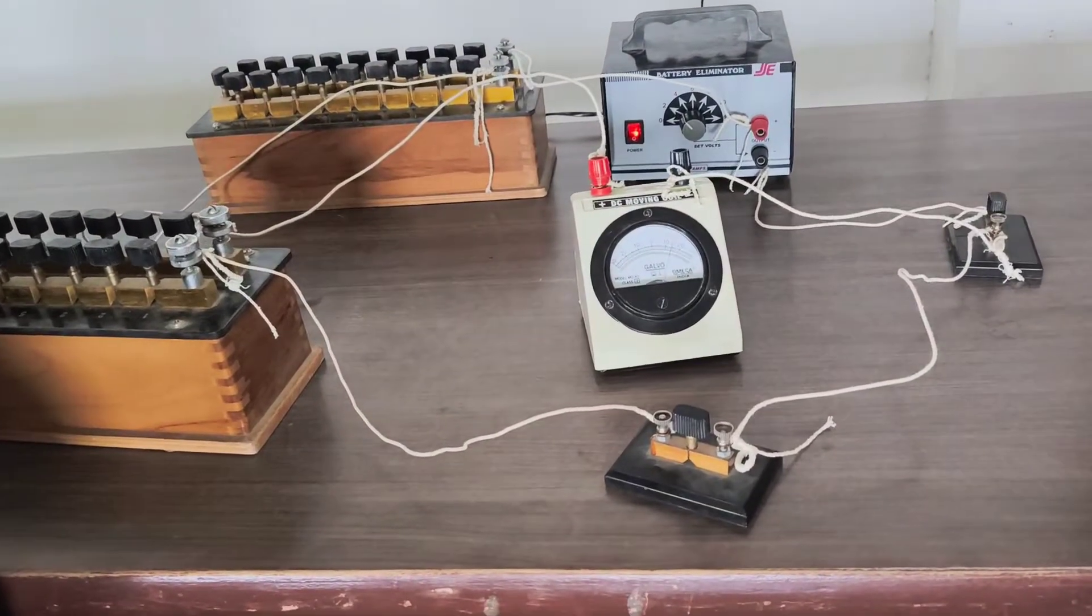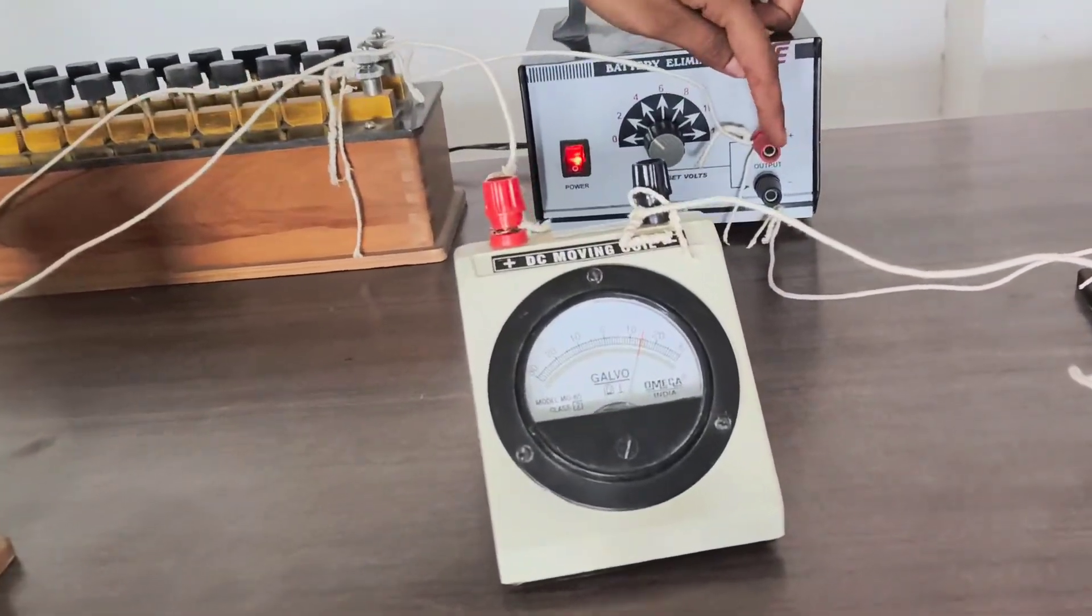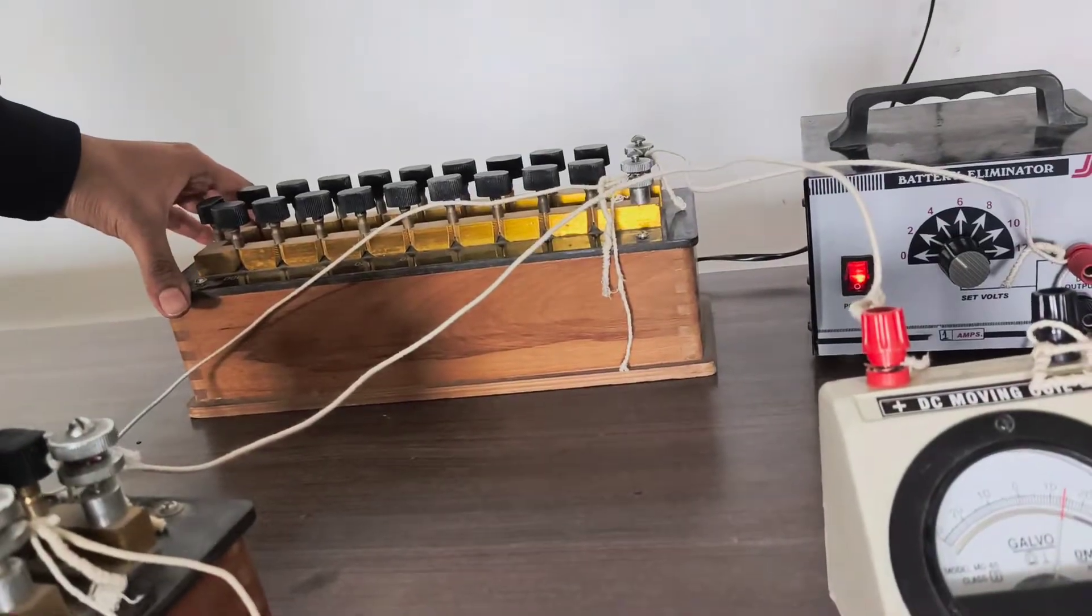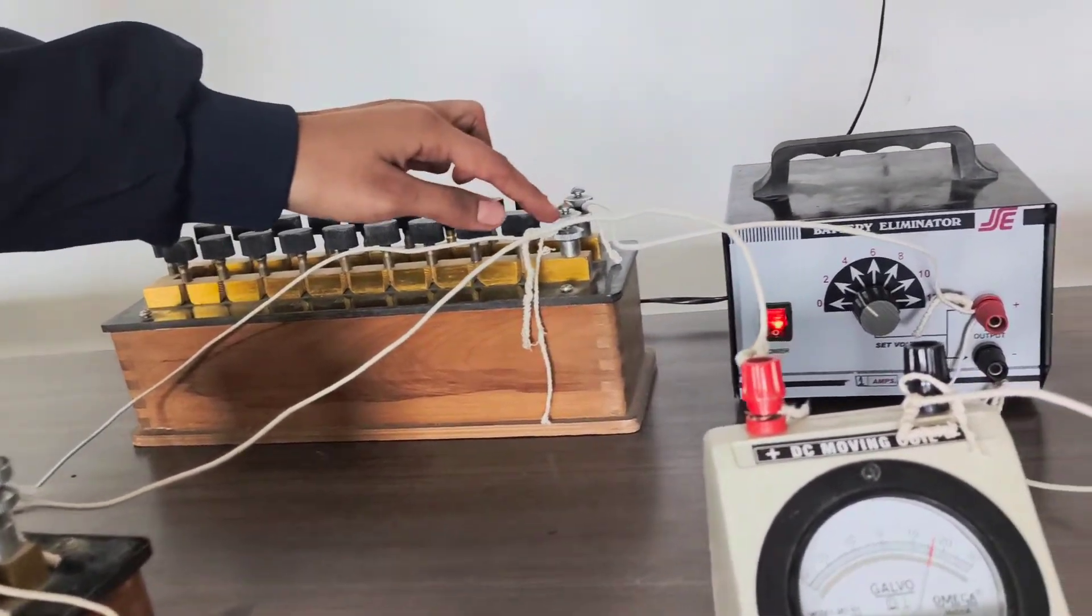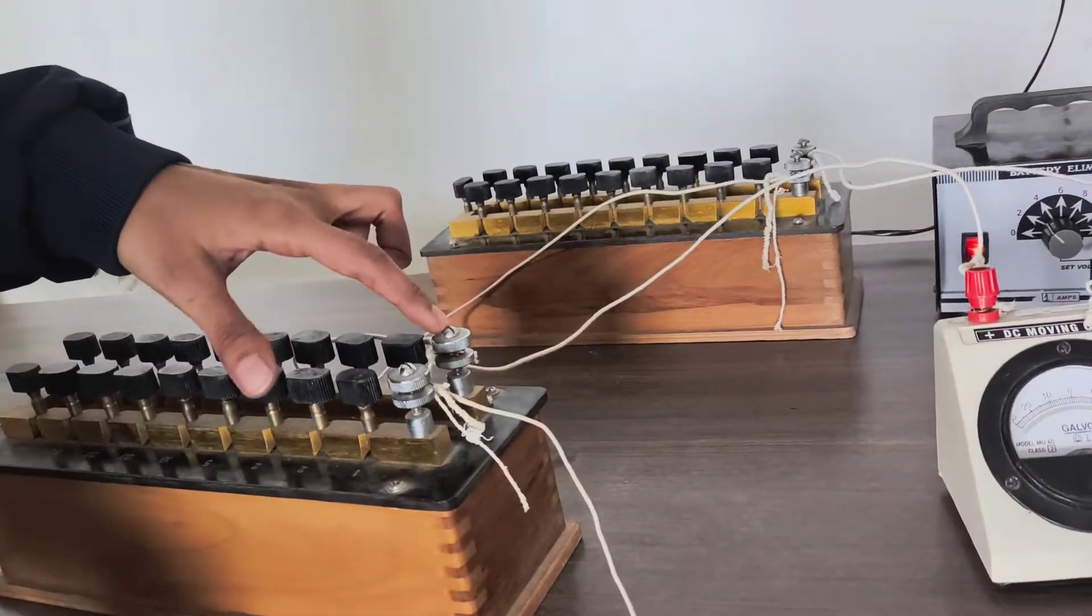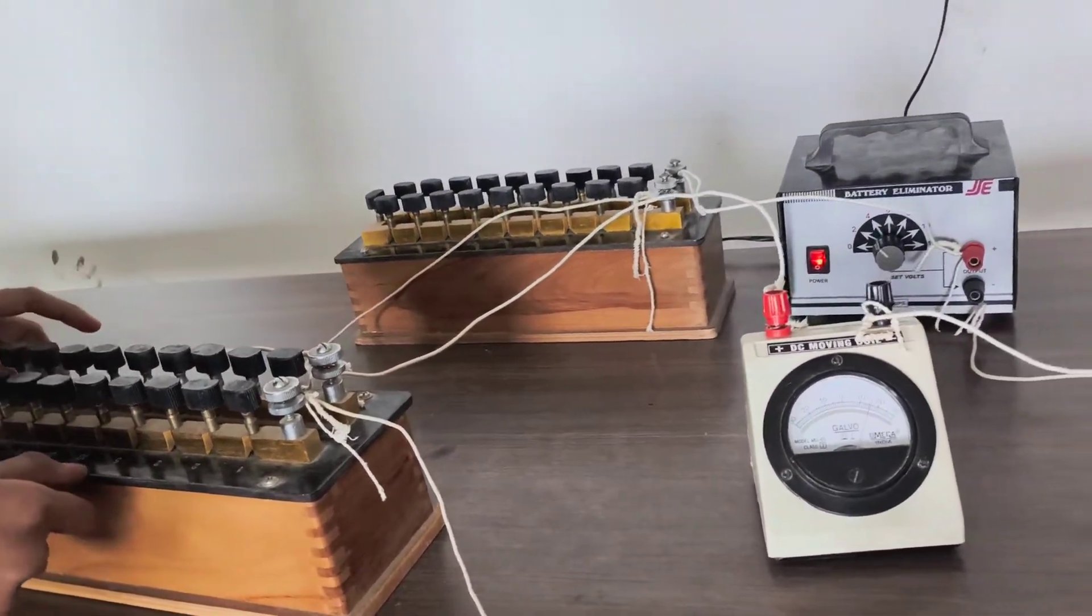Now let me show you the connections. Here you can see the positive terminal of this battery eliminator is connected to the larger resistance box R, and the other terminal of this larger resistance box R is connected to the shunt resistance, the smaller one.